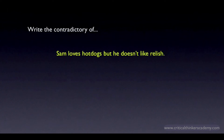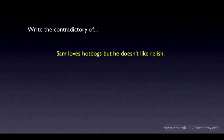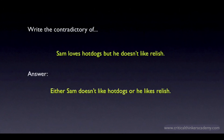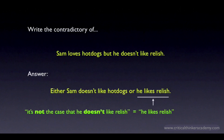Let's try another one: Sam loves hot dogs, but he doesn't like relish. You have to remember that, from the standpoint of propositional logic, the 'but' is functioning just like 'and', and the whole thing is still a conjunction. You also need to pay attention to the negation — 'doesn't like relish' — because you're going to end up negating this negation, which gives us an opportunity to use the double negation rule. Here's the answer: Either Sam doesn't like hot dogs, or he likes relish. You replace the conjunction with the disjunction and negate the disjuncts. We've used double negation on the second disjunct — it's much easier to write 'he likes relish' than 'it's not the case that he doesn't like relish.'